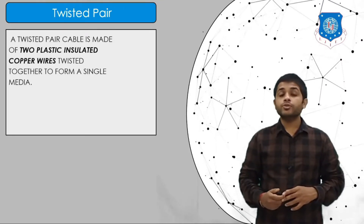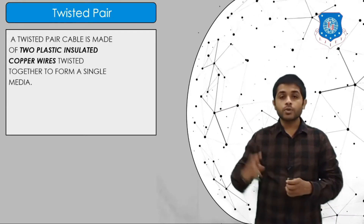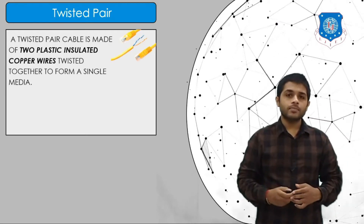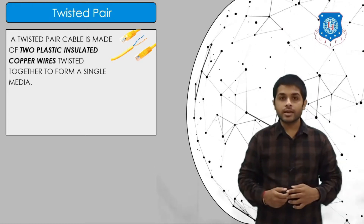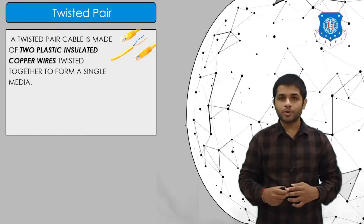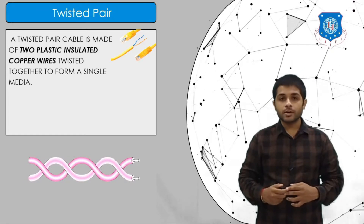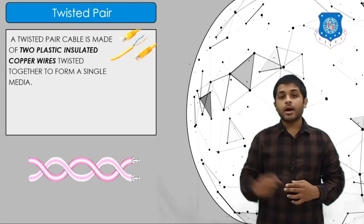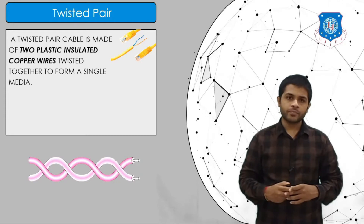The twisted pair cable is made of two plastic-insulated copper wires which are twisted together. You can see this type of cable in the Ethernet or LAN cable used to connect your laptop or router. Two cables insulated by plastic are twisted together, and it is simply called a twisted pair cable.